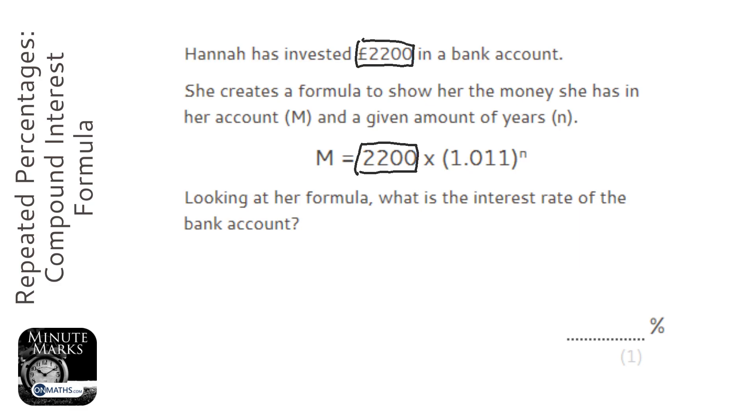The n here is the number of years and the M is the amount in her account. So the only thing that really hasn't been discussed is this number here - this number here is a multiplier.